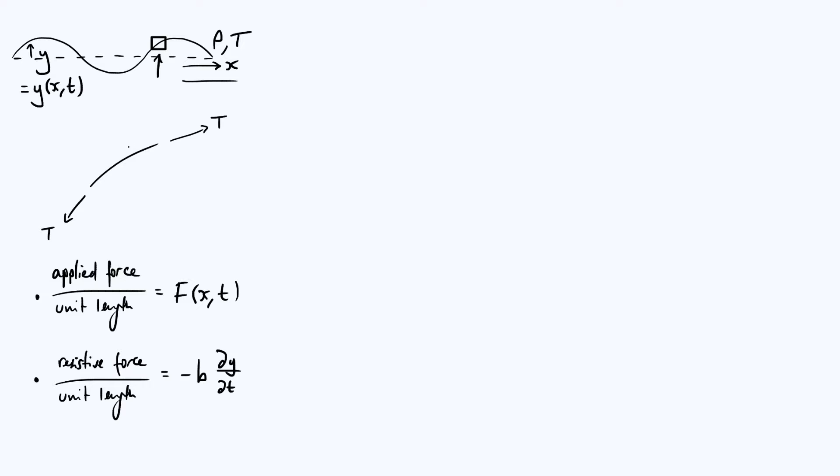For our derivation it's not just the tension which is acting, but you also have the applied force and the resistive force. The applied force, let me draw that acting in the upwards direction and label that as f, and we've got to multiply it by dx, which is going to be the length, the horizontal extent of that string element. The d simply means that it's an infinitesimally small quantity.